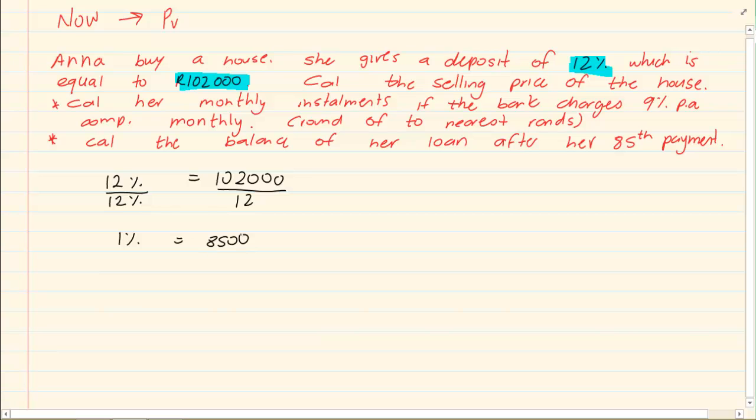What are they asking you? Calculate the selling price of the house. The selling price would be 100%. So, you are going to take the 1% and you are going to calculate 100%, which is 850,000.